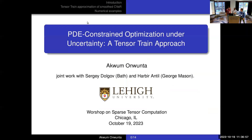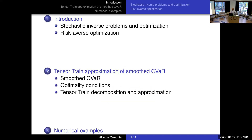Our next speaker will be talking about PDE-constrained optimization under uncertainty. Thank you to the organizers for inviting me. This is joint work with Abia Antil and Sergei Dolgov. I'll give a brief introduction to stochastic inverse problems and optimization, then talk about risk-averse optimization, and then move on to how we used tensor train approximation to solve this problem, followed by numerical examples.